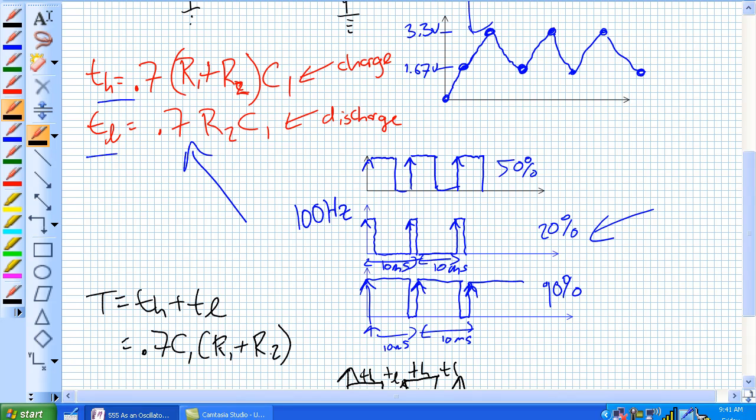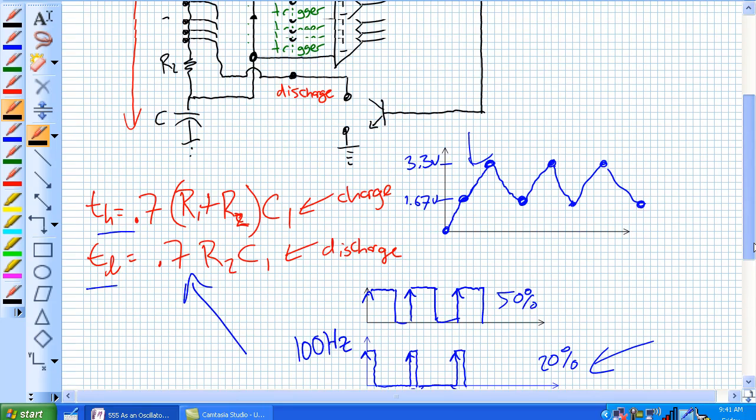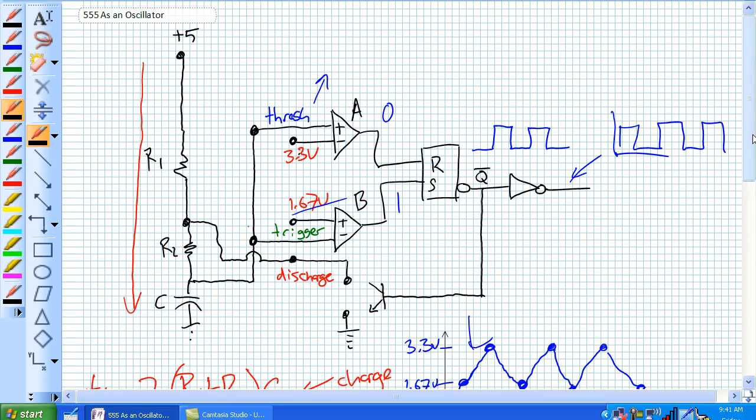Since we've typically been dealing with 50% duty cycles, how do you make it exactly 50%? Well, why not make R1 and R2 equal to each other? But you're like, hey, wait a second. That wouldn't work, because it'd be charging through twice as much and discharging through half as much. That wouldn't work. But here, hear me out. Make them equal to each other, but put a diode there.